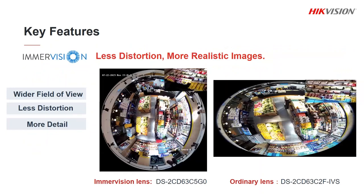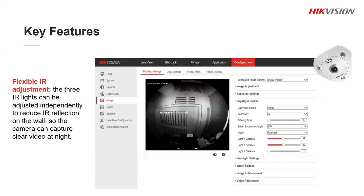In the 12 megapixel fisheye we've changed to a really high quality lens from a company called Imovision. This has an even wider field of view so you've got more of the scene being covered, and there's also less distortion — the image is almost a perfect circle compared to the oval shape of the older lens. This also means when you de-warp the image into a PTZ view or zoom into an area you're going to see more detail in the scene. We also have IR built in so cameras can be used in low light conditions. With a fisheye you could get IR reflection from a wall, and reducing overall IR intensity would leave some areas too dark, so we have three separate IR lights that you can adjust independently — you can fix reflection from a wall while keeping IR intensity high in the rest of the scene.